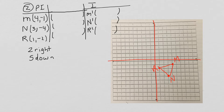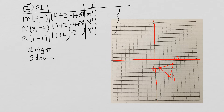Now we're going to move on to number 2 — another translation. We've filled in the ordered pairs for the PI and graphed the pre-image. Now we're going to go 2 to the right, so we put in our 4, our 3, and our 1. It's 2 to the right, so it's plus positive 2 for each x-value. We're going 5 down, so it's negative 1 plus negative 5, negative 4 plus negative 5, and negative 2 plus negative 5. Our new ordered pairs are 6, negative 6; 5, negative 9; and 3, negative 7.